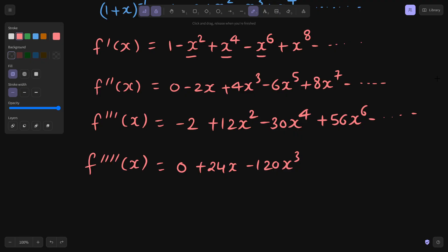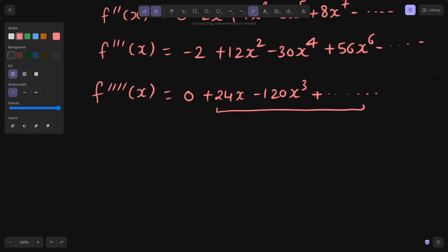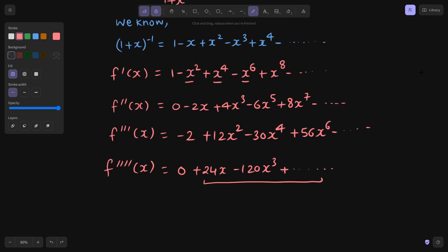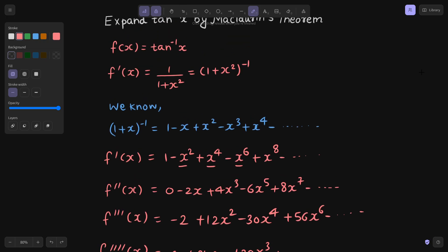I am not writing the next term because that is to contain x power 5. I am not interested in those calculations. Because terms after this will start becoming 0 because they all will contain at least 1x. So we have calculated this. Now it's time to calculate their values at 0. So first of all, what was our function? Function is tan inverse x. So if I find tan inverse 0, that is 0. So f(0) is tan inverse 0 and that is going to give us 0.